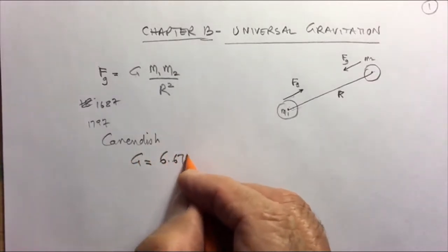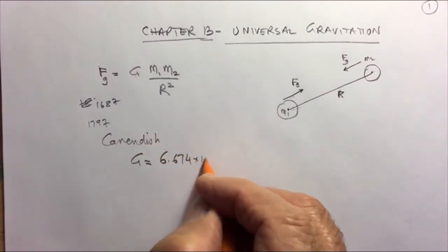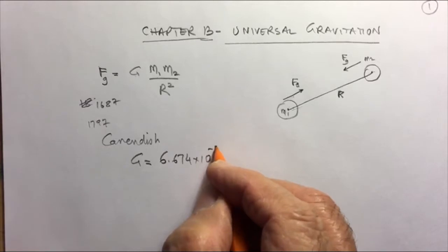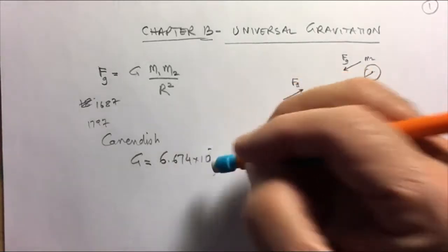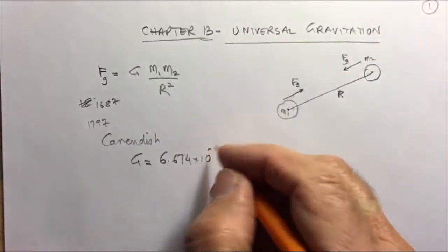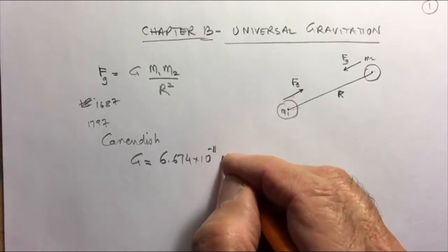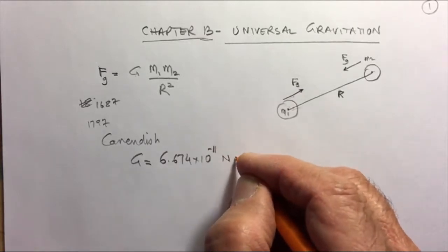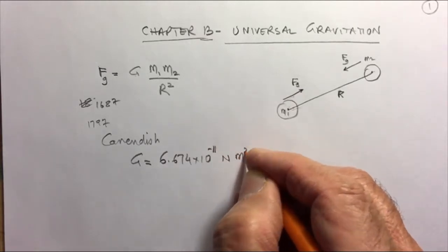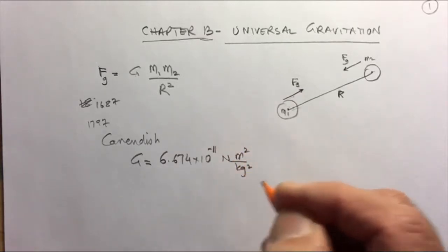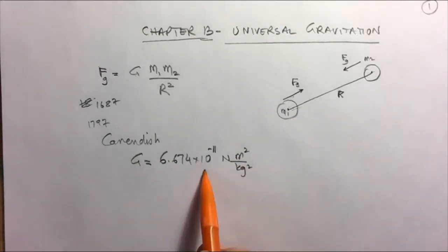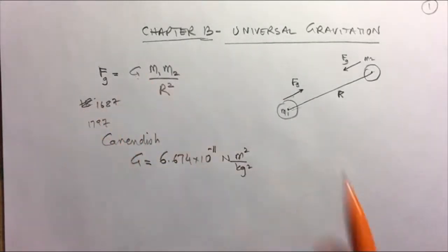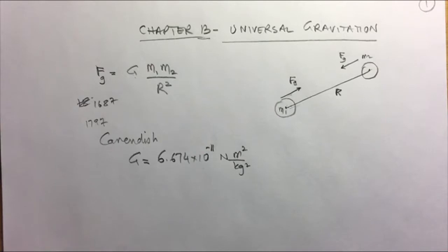Cavendish found G to be 6.674 × 10⁻¹¹. The units are newton·meter² per kilogram². With this constant in the equation, we can calculate the force of gravity between different objects.